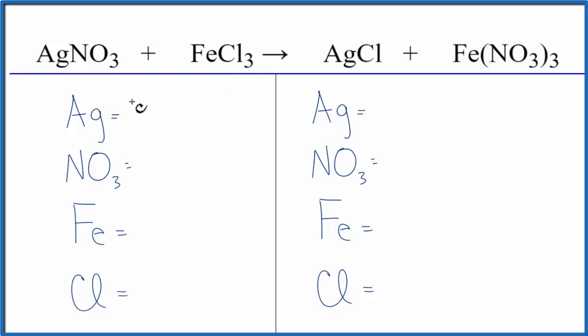Let's count the atoms up on both sides. We have one silver, and then NO3, that's called a nitrate ion. It's a polyatomic ion, and it appears here, stays together, and appears here again. So we can count this nitrate, this NO3, as just one thing.